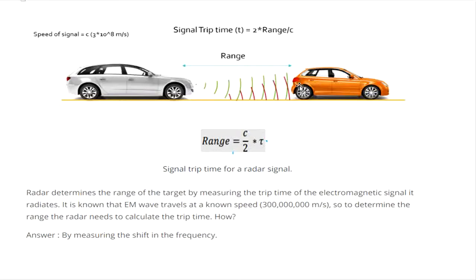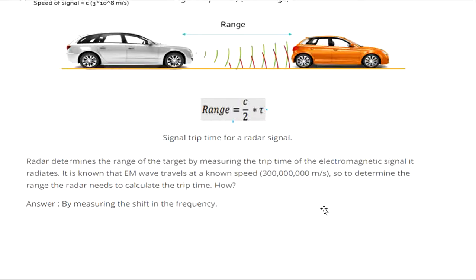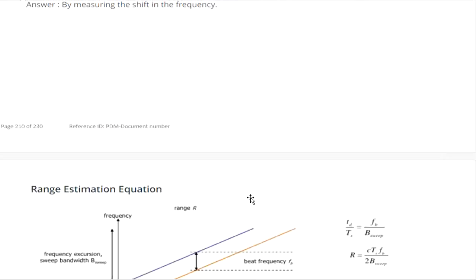For range calculation: a white car has a radar and sends a signal to an orange car. The signal hits the orange car and reflects back to the radar. To calculate the range, we rely on the signal trip time. Trip time equals two times range divided by the velocity C (speed of light, 3×10⁸ meters per second). From that we can get the range. The radar determines the range of targets by measuring the trip time of the electromagnetic signal it radiates — electromagnetic waves travel at the speed of light.